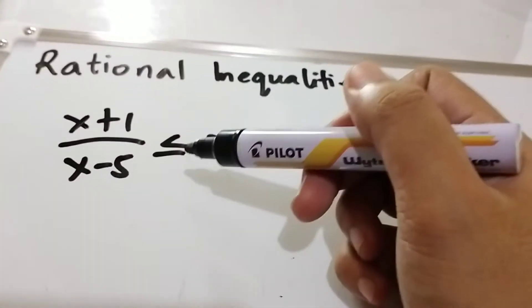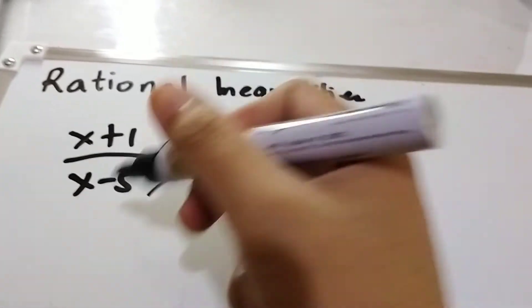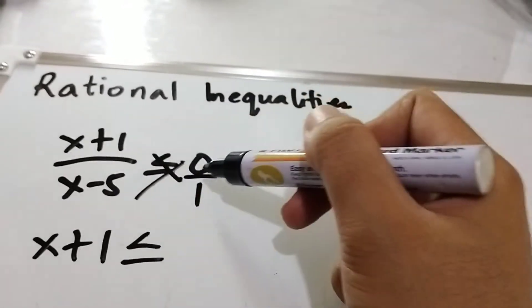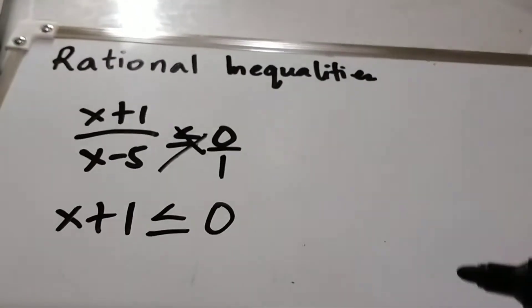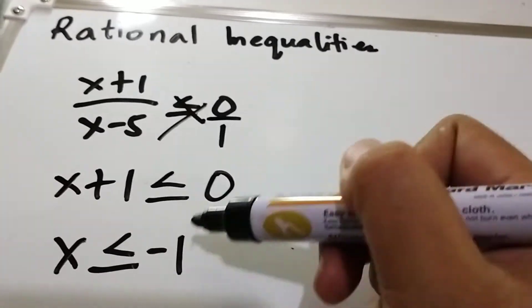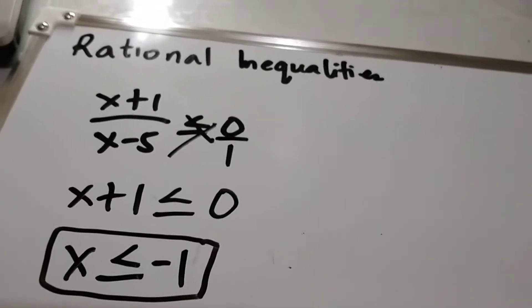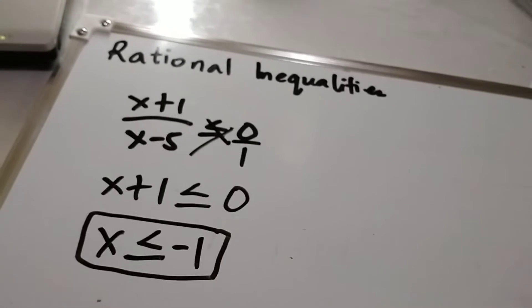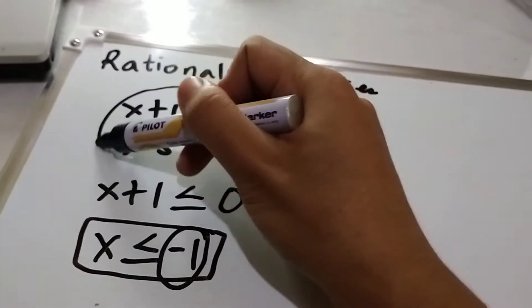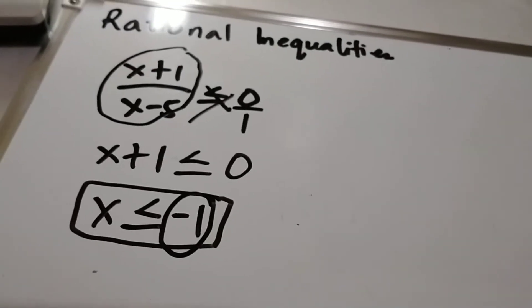What you are going to do is cross multiply. So we have x plus 1 times 1, that is x plus 1, less than or equal to x minus 5 times 0, which is 0. Now simplify this. We have x is less than or equal to negative 1. So this negative 1 will serve as our critical value. What you are going to do is substitute this negative 1 into the rational expression to identify whether negative 1 is included in our solution.